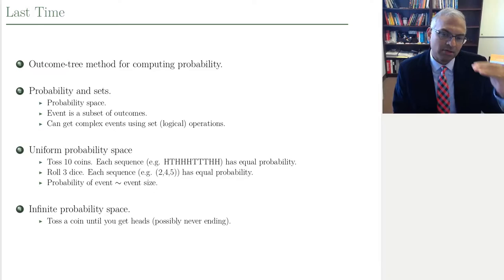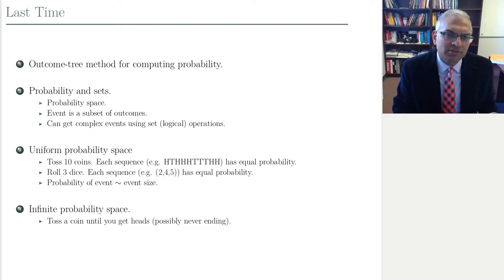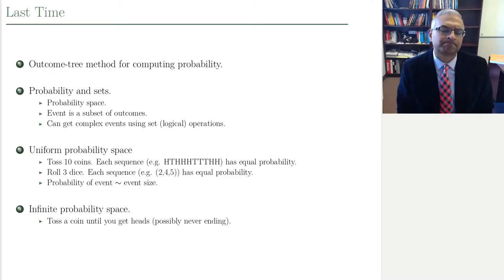The outcome tree method breaks down the experiment into steps, and each step causes the tree to branch. Once you collect all this branching together, at the leaves of the tree you have your outcomes. You then assign probabilities to each branch in the tree and multiply probabilities to get the probability of each outcome.